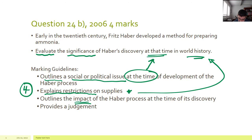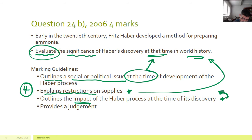The marking guidelines also require the impact of the Haber process, and then a judgement call. Because the question uses the word 'evaluate,' it's very important that you are making some sort of judgement about the significance — saying it was very significant — and you need to make sure you're supporting that with a clear statement.